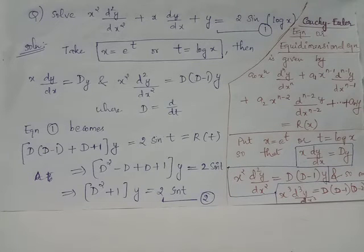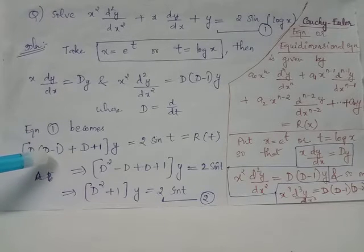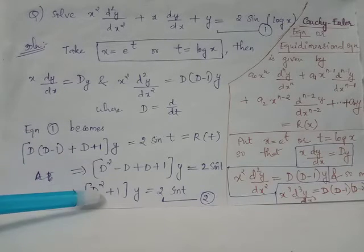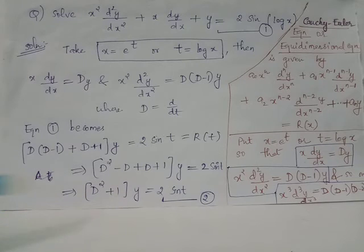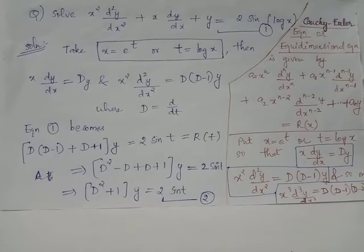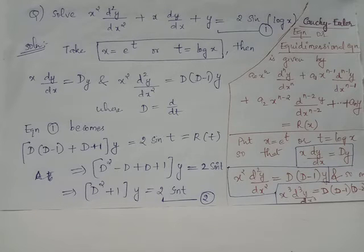Equation 1 has x as the independent variable. On simplification, this differential equation becomes (D² + 1) acting on y equals 2 sin t. We call this equation 2, where capital D stands for d/dt.